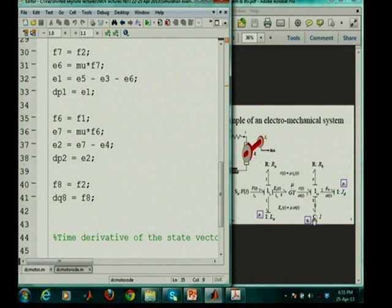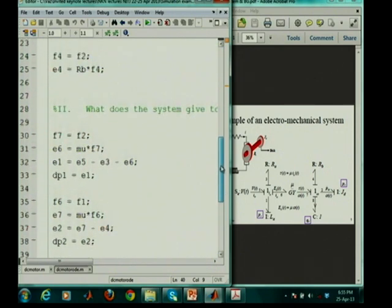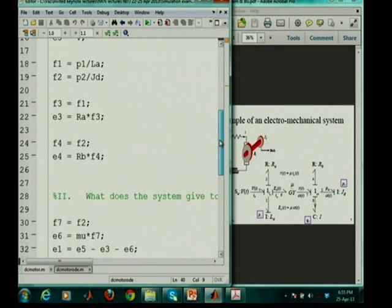In the same way, for the last state, we take what does the system give to this? Effort or flow, flow 8, rate of change of displacement, dq8 is equal to flow 8. And what is this flow 8? Flow 8 is brought into this junction from this bond, flow 2. All that you have to do is just follow the causal path. So, flow 8 comes into this junction from flow 2. And flow 2 has already been defined over here on line 19. So, it is done.